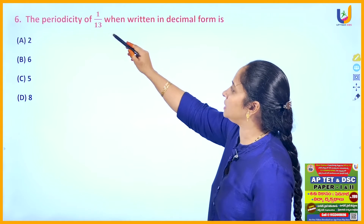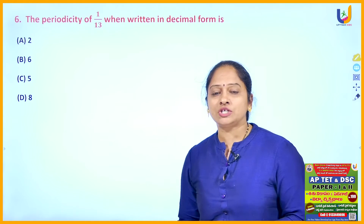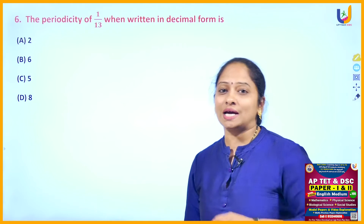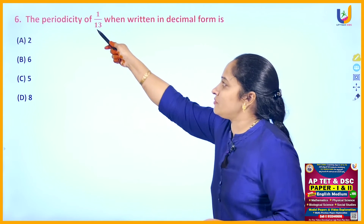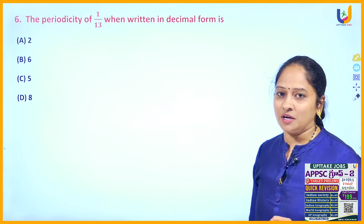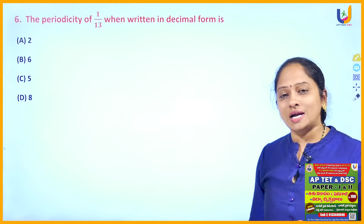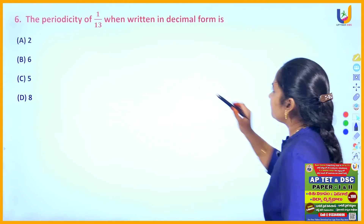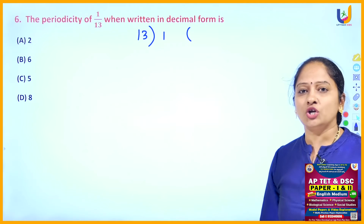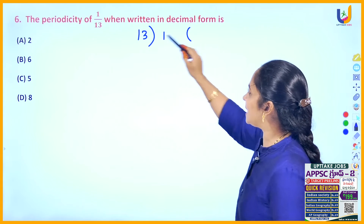The next question: the periodicity of 1 by 13 when written in decimal form. Period and periodicity are the two terms used for non-terminating recurring decimals. By observing the denominator it is clearly a non-terminating repeating decimal. Let us convert that rational number into decimal form by the division method. The numerator is 1 and the denominator is 13.